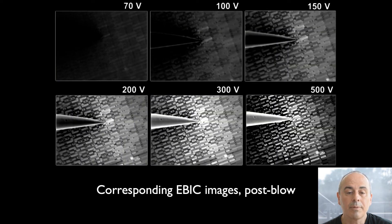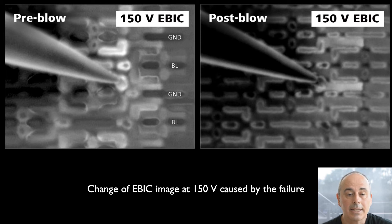The next set of images are the corresponding EBIC images after creating the failure. At a first glance, we see the gate light up in addition to the gate contact as well as its neighboring gate. A closer look reveals a more drastic change of the complete structure in the next image. Let us now have a closer look at this change and select two images taken at 150 V beam voltage, one before and one after the blow. The change is most obvious at beam voltages of 150 V and 200 V.